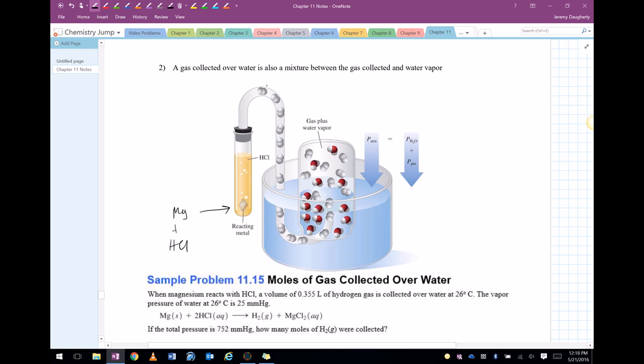So that hydrogen gas travels along this tube, and then we have it in this gas collection vessel. Now, this gas collection vessel originally is full of water. So that's full of water.